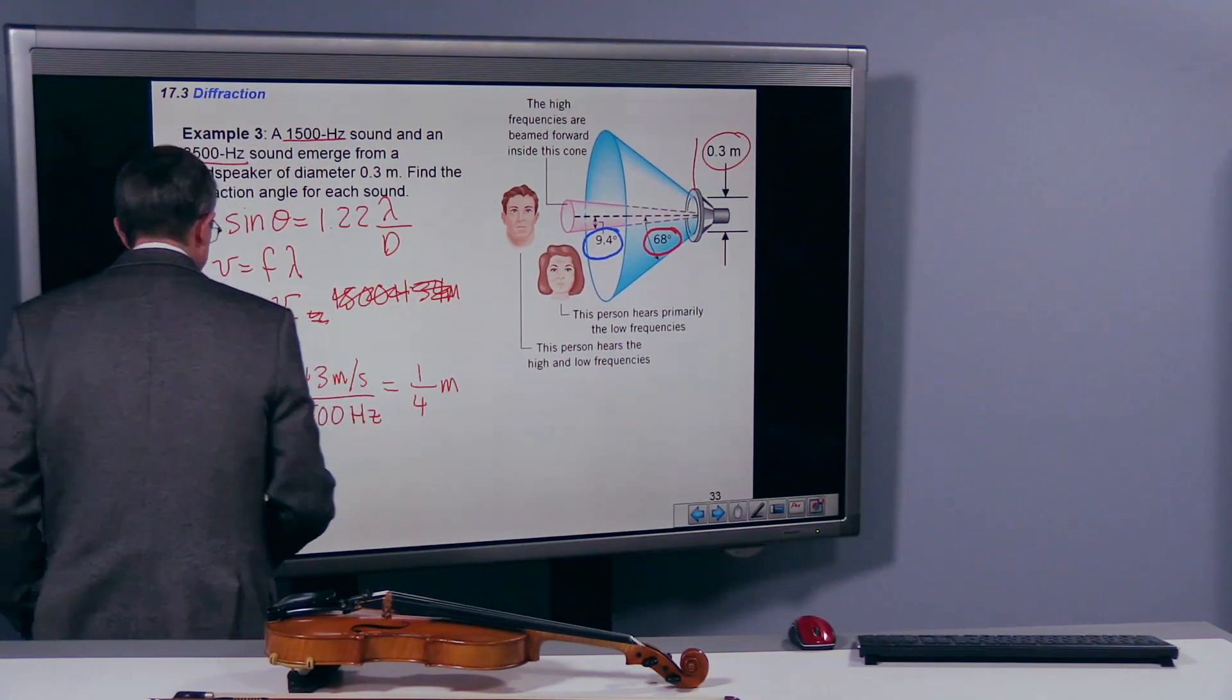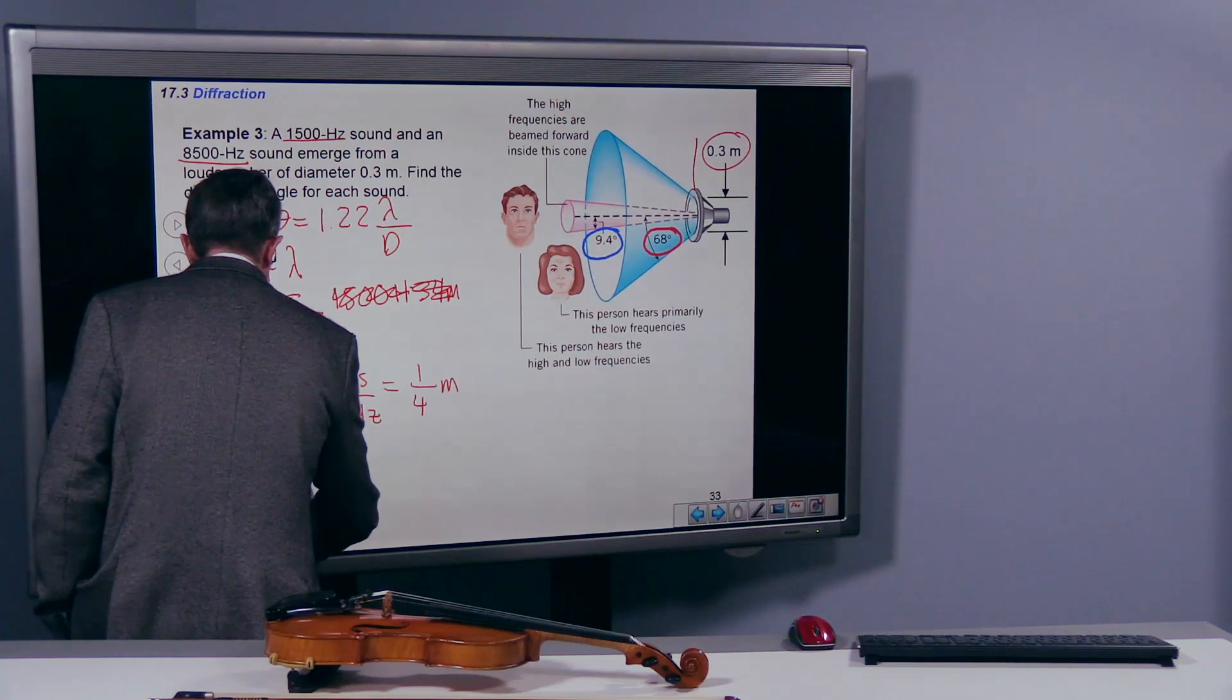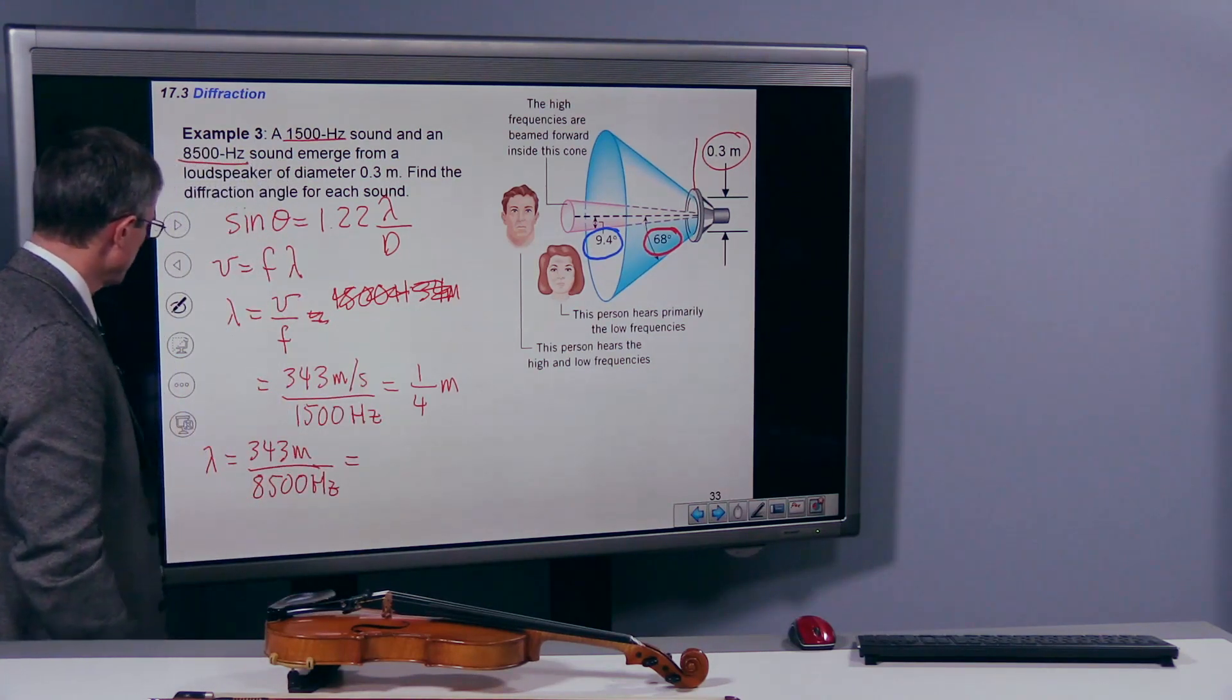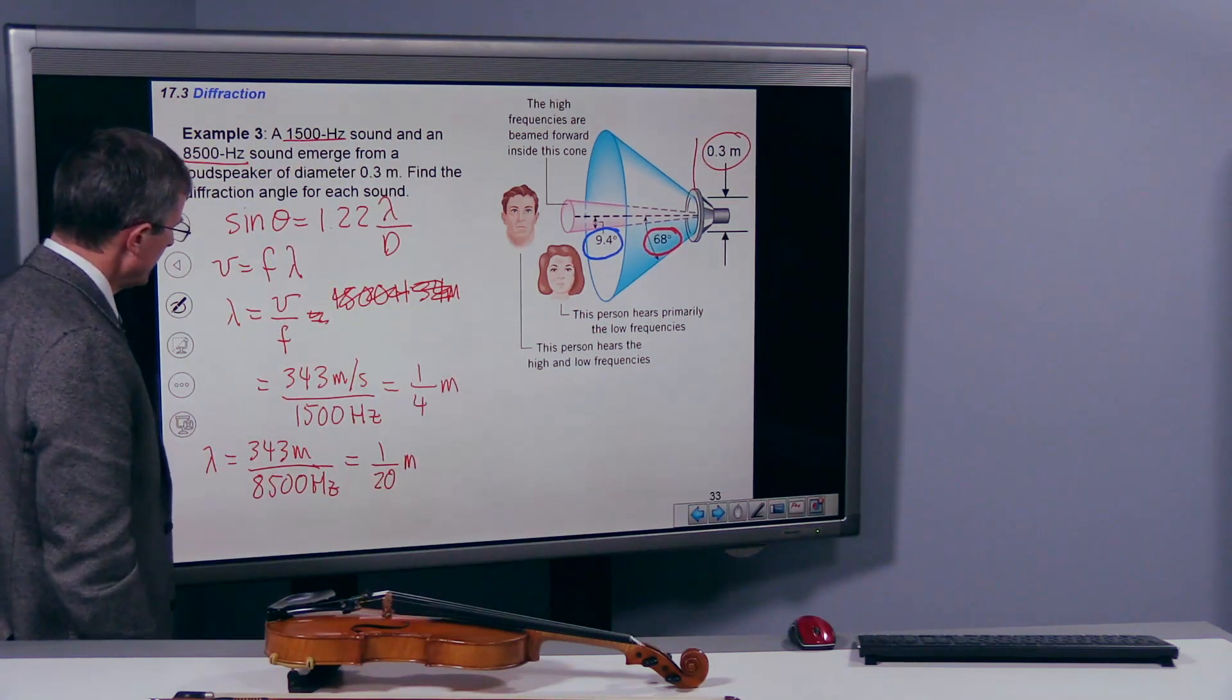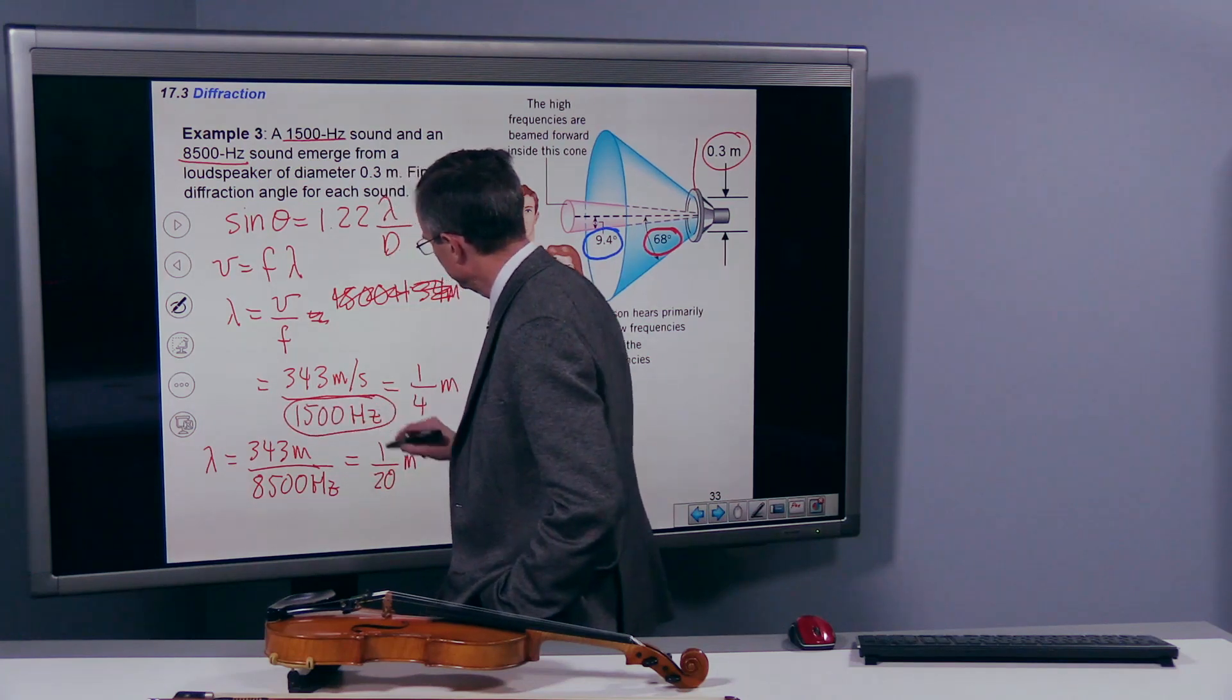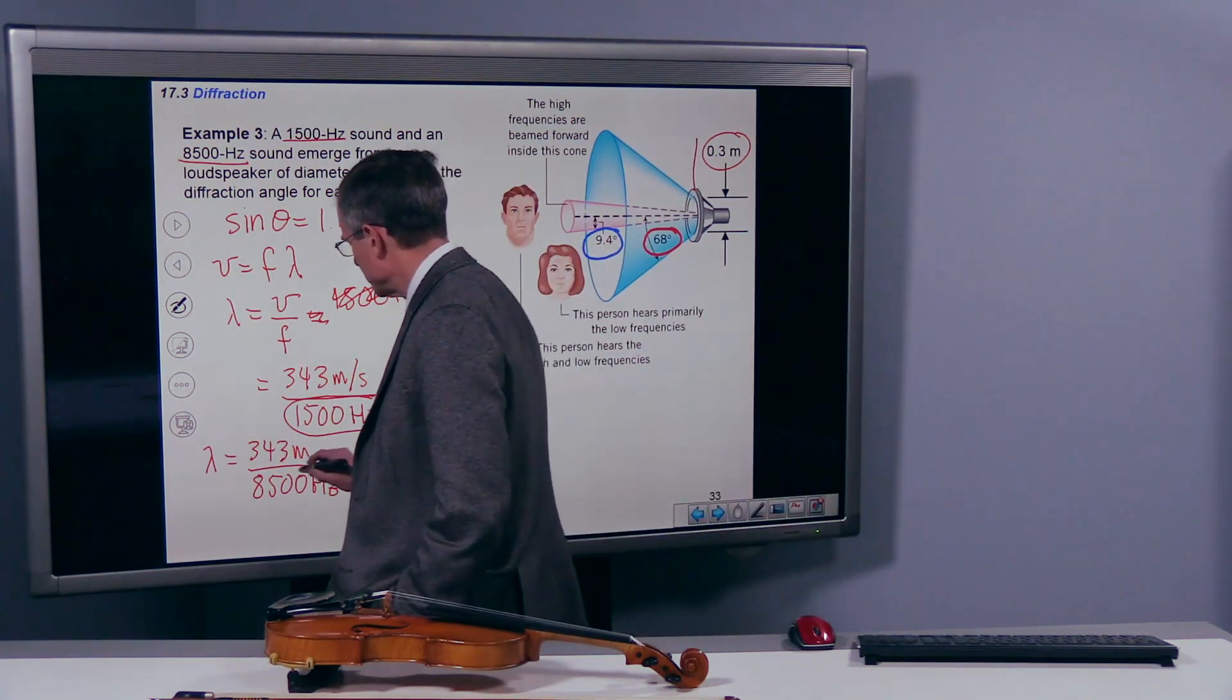Then for the 8,500 Hz sound, we have 343 m divided by 8,500 Hz. That's twice 243, so that's one-half. That's about 1 over 20 or so. These are rough numbers. So remember that a low frequency sound has a larger wavelength. And sure enough, this wavelength, one-fourth of a meter, is larger than one-twentieth of a meter for this higher frequency sound.